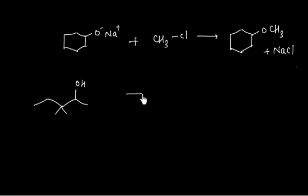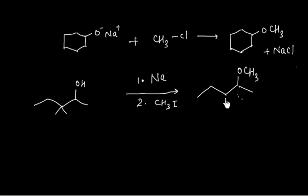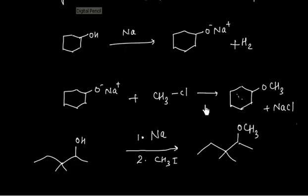Let us say — what will be the product in this case? First the alcohol is reacted with sodium to form the alkoxide ion, and then it is reacted with CH₃I. So in the first step we form the alkoxide ion, and then it attacks CH₃, so finally we will have the product with an OCH₃ group.